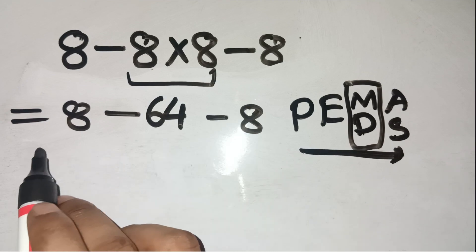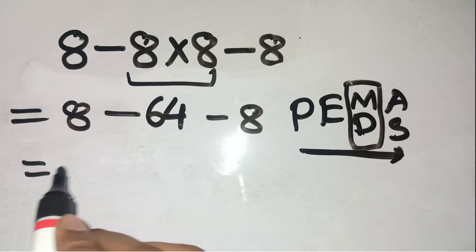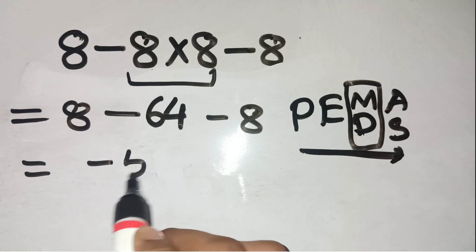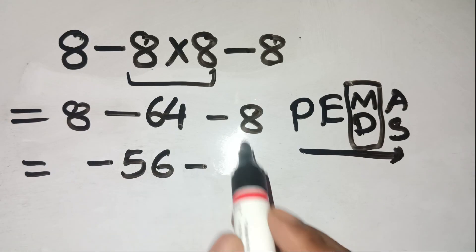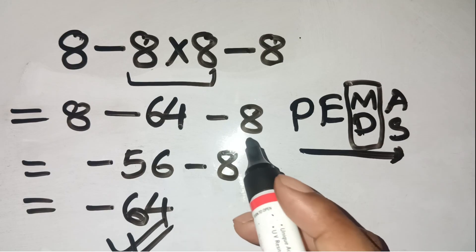Now we go from left to right. Start with 8 minus 64, which equals negative 56. Then negative 56 minus 8, that gives negative 64. So the correct answer is negative 64, not zero.